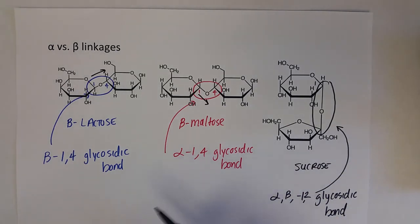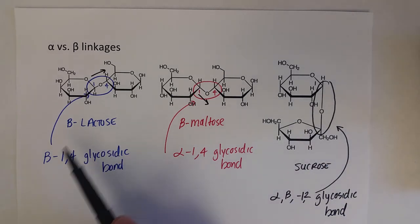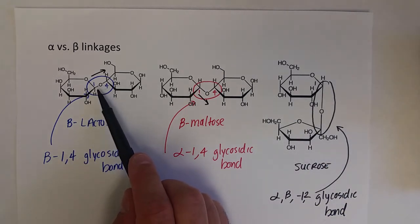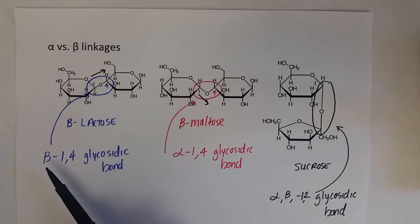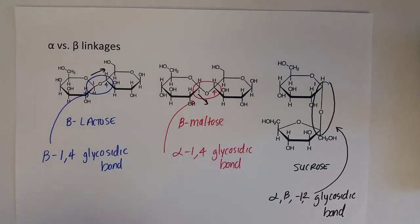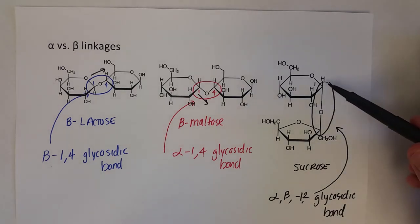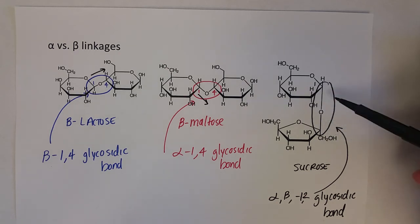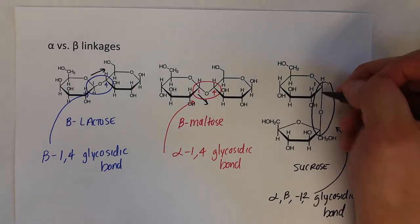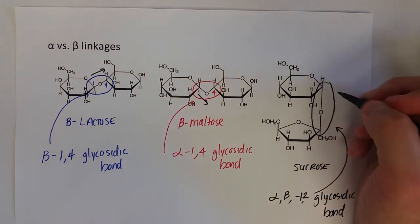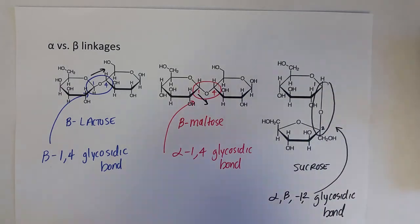The big difference between all three disaccharides is the linkage: lactose has a beta-1,4 glycosidic bond; maltose has an alpha-1,4 glycosidic bond; and sucrose has an alpha-beta-1,2 glycosidic bond, where the 1 and 2 refer to the first carbon on glucose and the second carbon on the fructose monosaccharide.